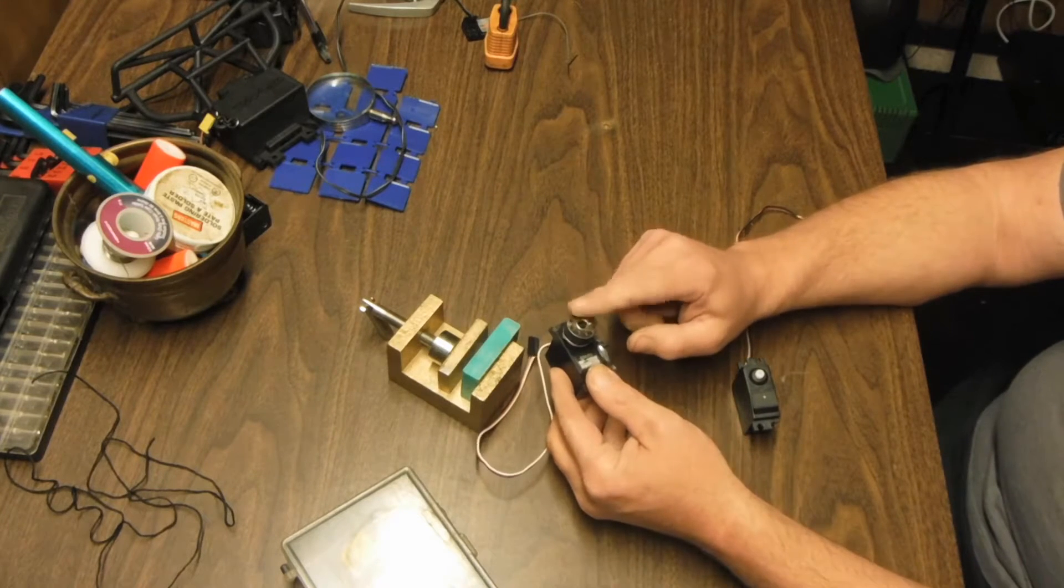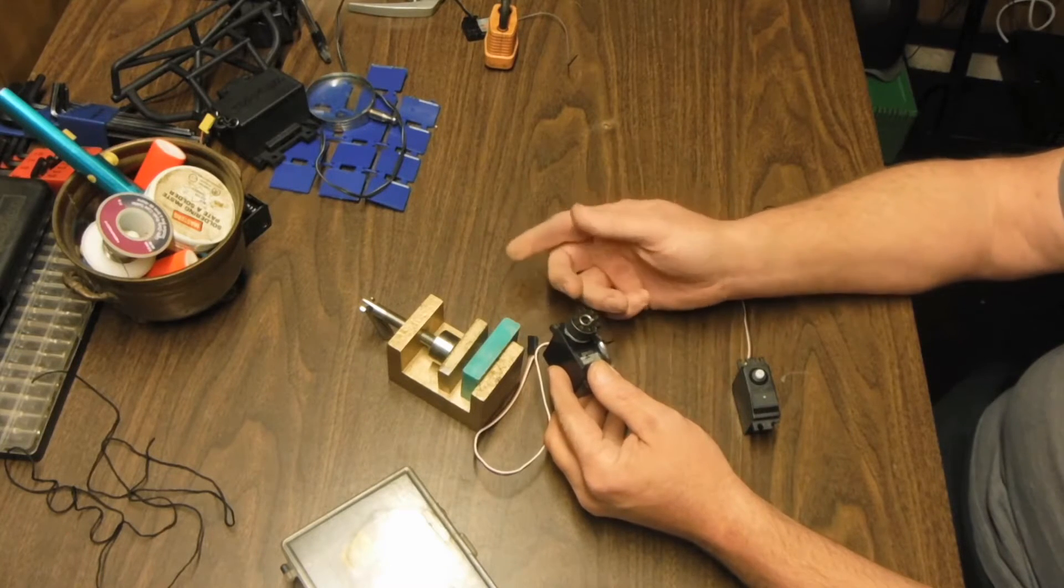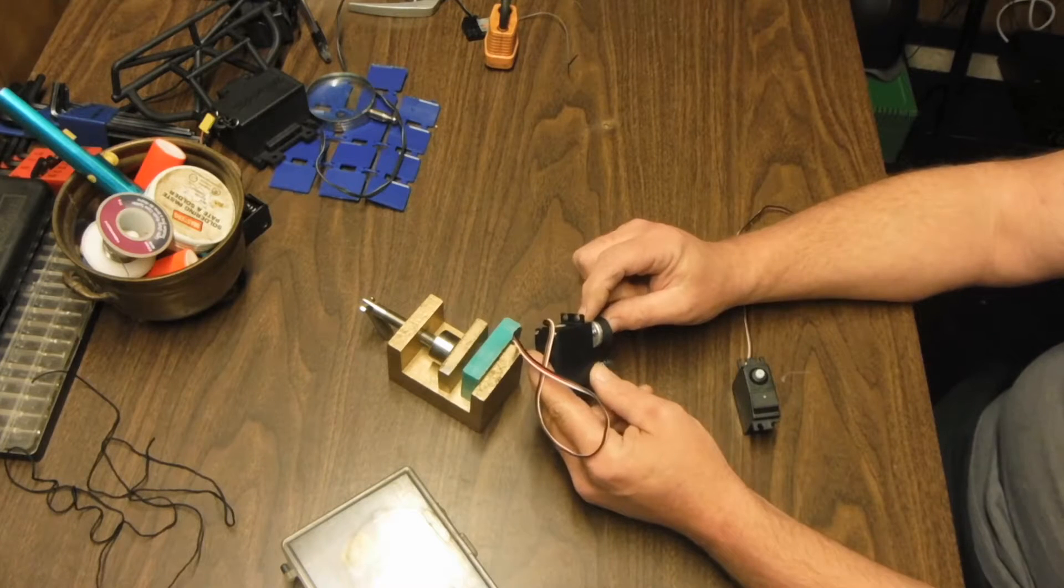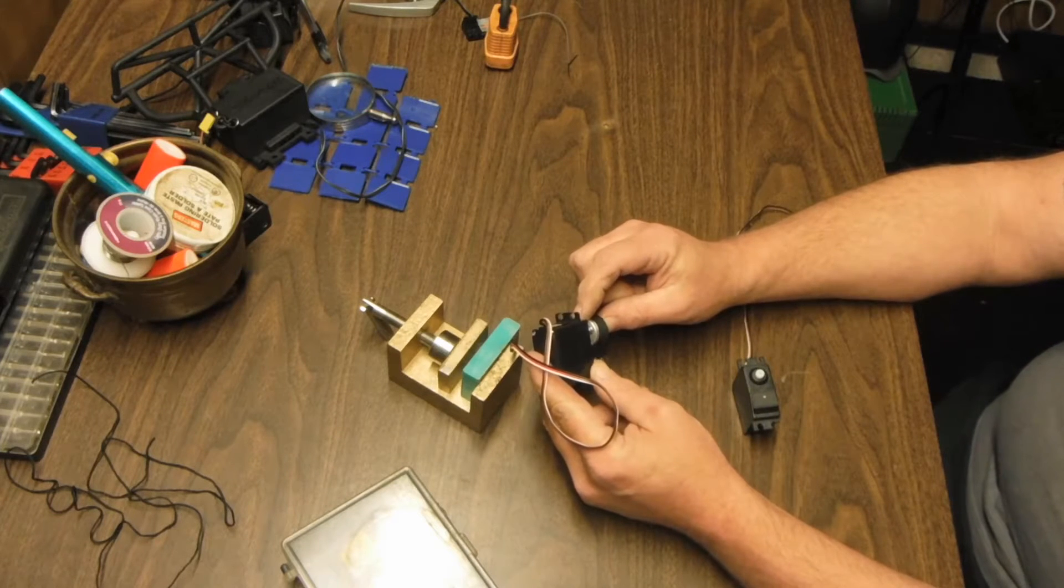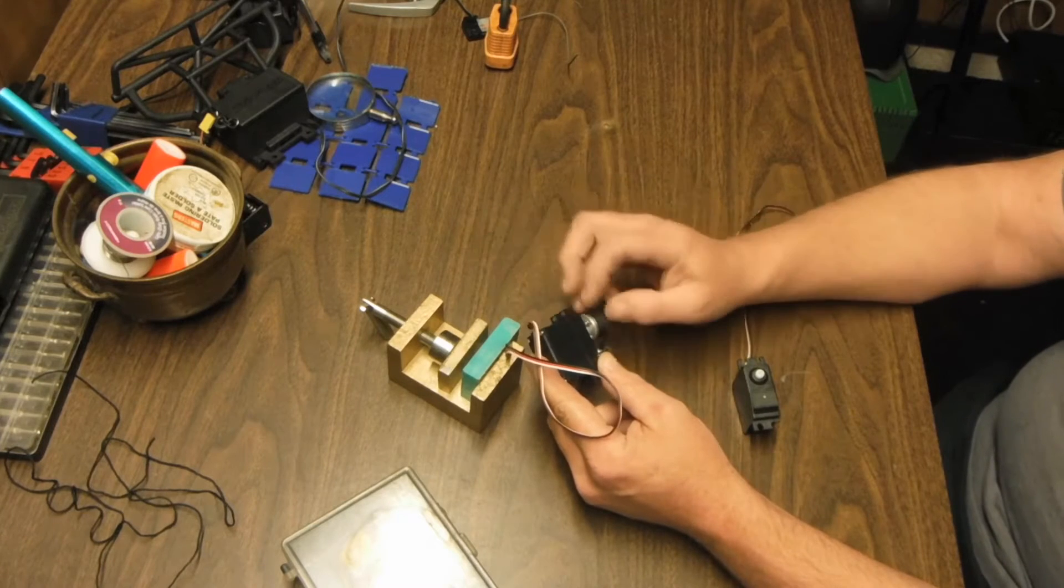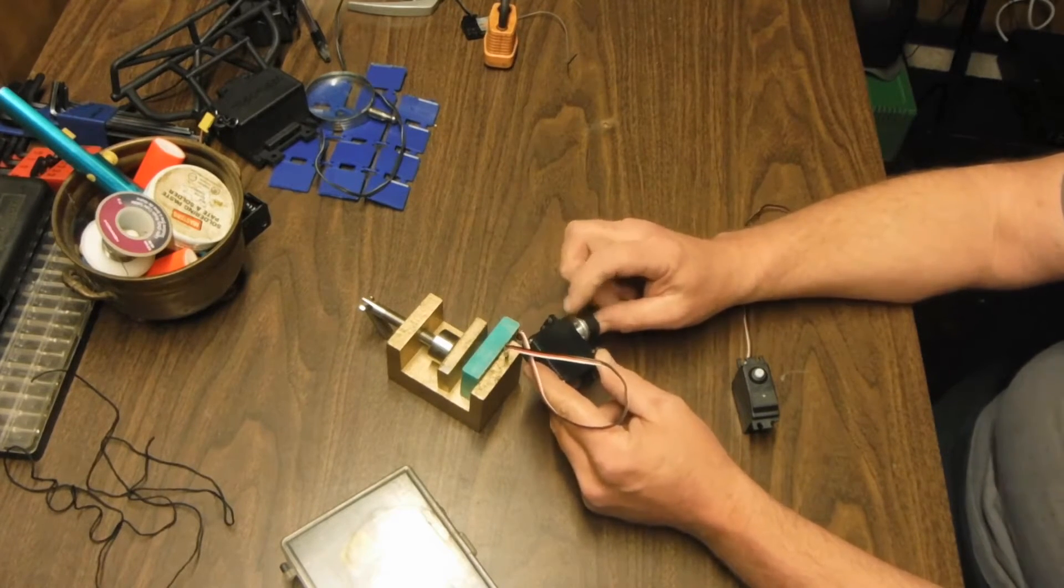You're going to need a sewing machine bobbin - you can buy these at a lot of different places that carry sewing machine products. You're also going to need a round metal plate servo horn. Sometimes you'll get screws with them, sometimes you don't, but they are threaded, which is kind of nice. I even have nuts on mine just for extra reinforcement.